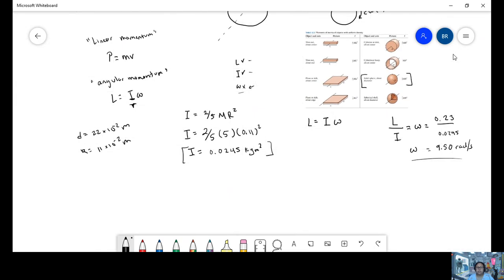So I have angular equals 9.50 radians per second. For radians, revolutions. One revolution is two pi radians.